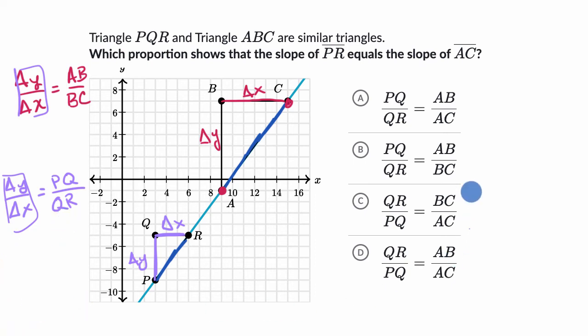Now, which of these say that? So this one has PQ over QR, and it has AB over AC, not BC. So I'll rule that one out. This one has PQ over QR and has AB over BC. I'm liking this one.